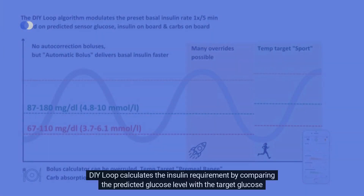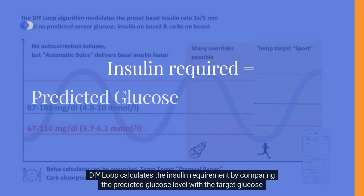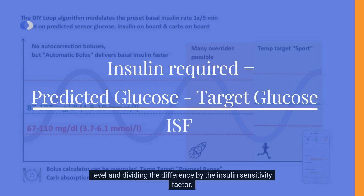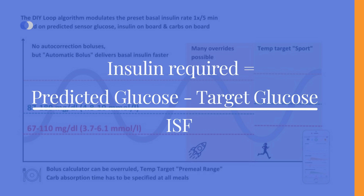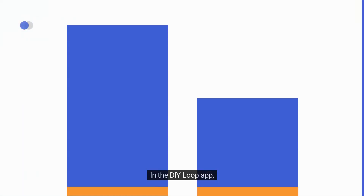DIY Loop calculates the insulin requirement by comparing the predicted glucose level with the target glucose level and dividing the difference by the insulin sensitivity factor. This insulin requirement is used to adjust the preset basal insulin rate.